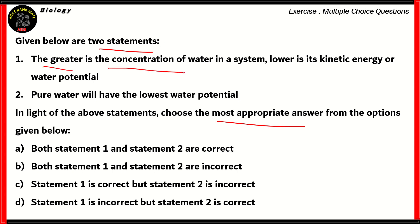Statement one says, the greater the concentration of water in a system, lower is its kinetic energy or water potential. This statement is actually incorrect, because if you have more concentration of water in a system, it's more dilute. So that means you have a higher kinetic energy and a higher water potential. So therefore, statement one is incorrect. Now, that means option A is incorrect and also option C is incorrect, because in both of these options, they say that statement one is correct when it's not.